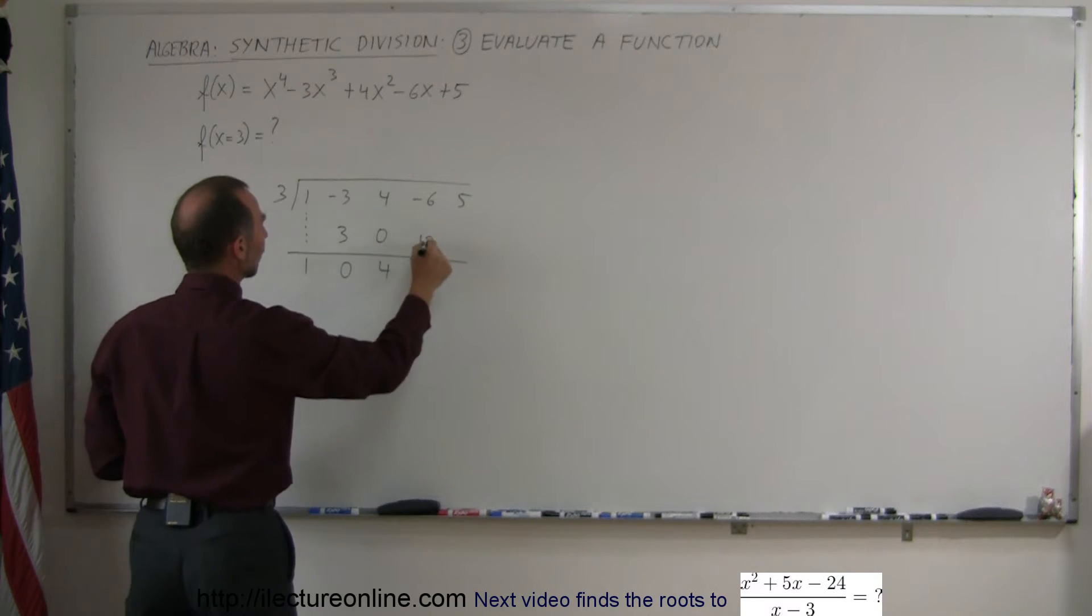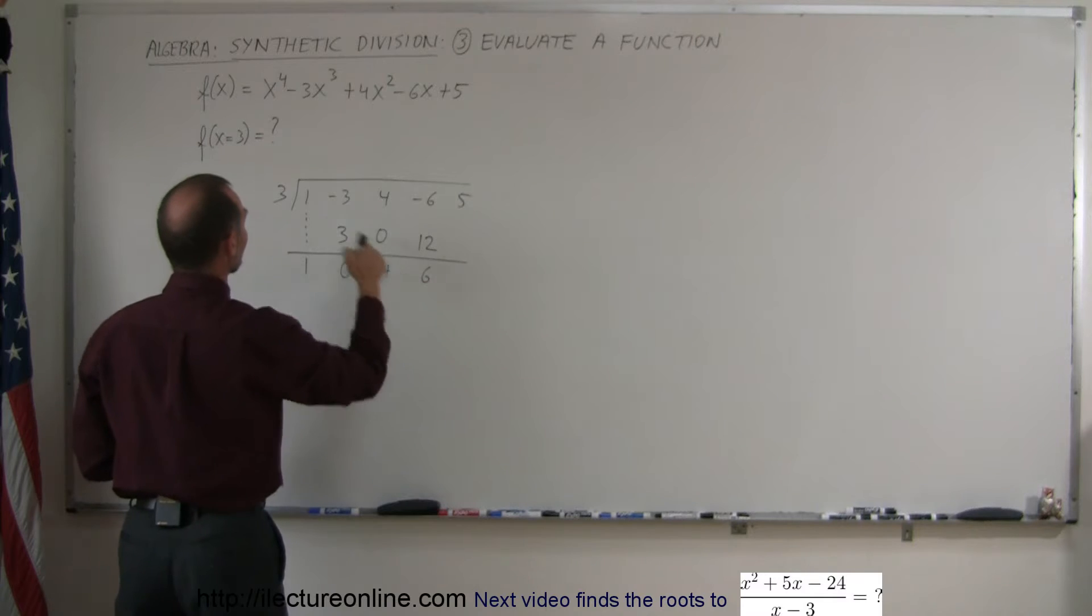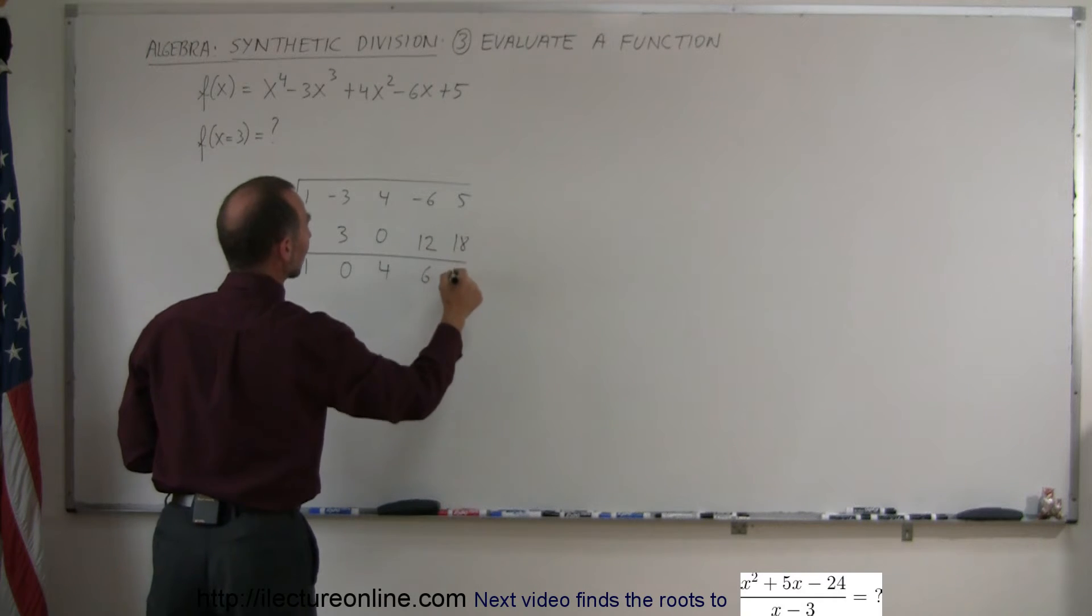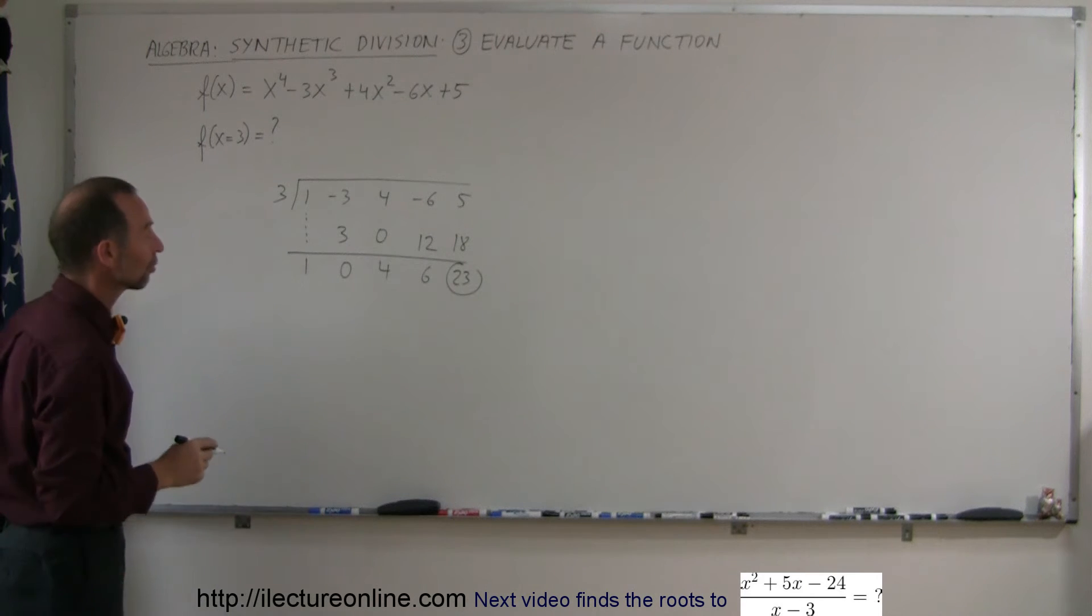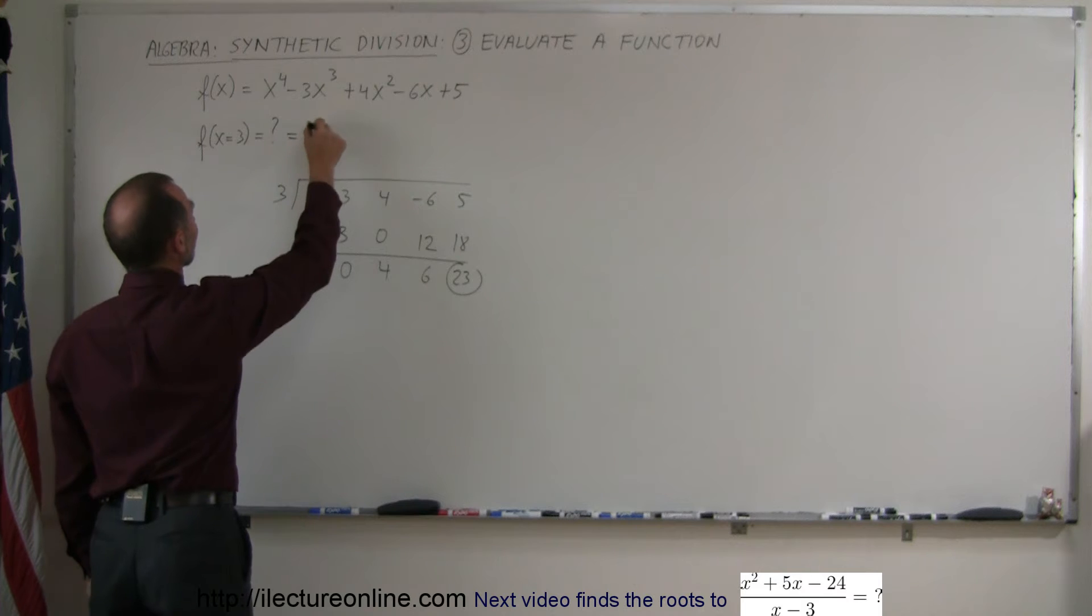4 times 3 is 12. Add them together, you get 6. 6 times 3 is 18. Add them together, you get 23. And by the way, that is the function evaluated at x equals 3. So f(3) equals 23.